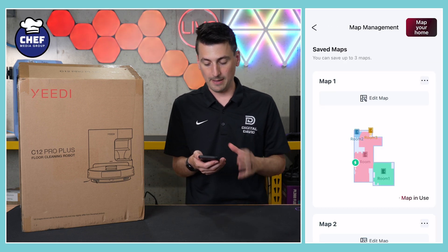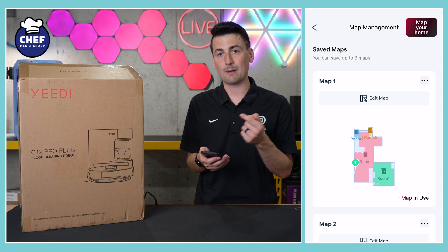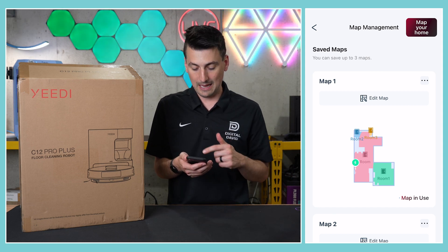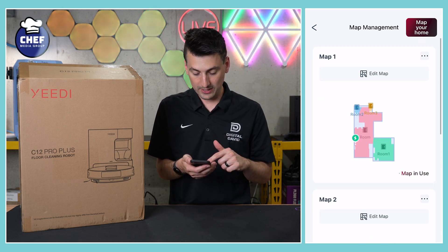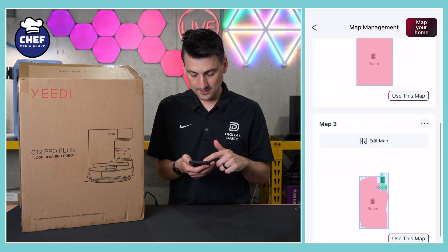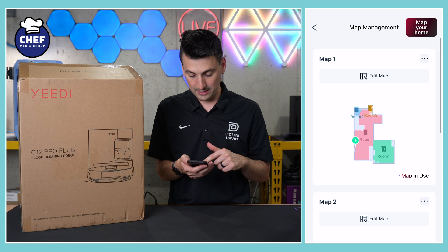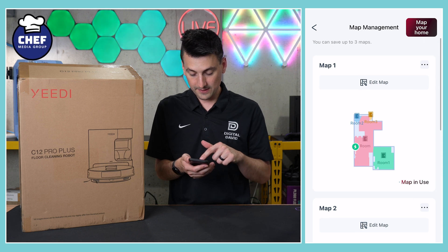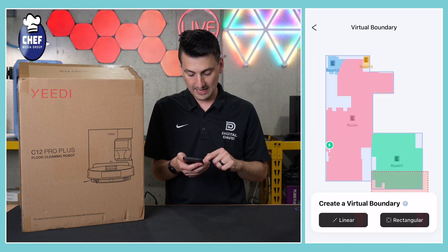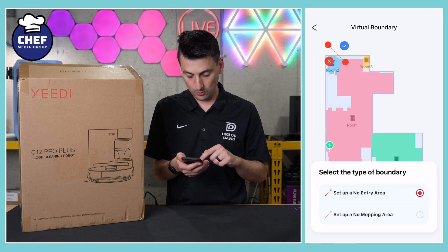Our middle icon is going to be our map management in the top right-hand corner. We can quickly map our home, we can view our saved maps — this supports up to three maps — and then we can edit our maps.